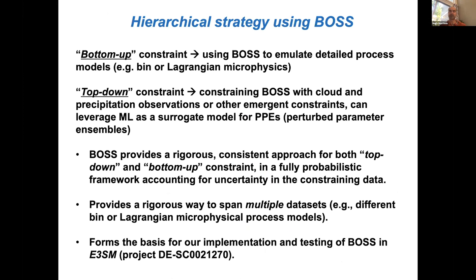Taking a step back, we can envision a more hierarchical strategy using BOSS — basically using it as a bottom-up constraint to emulate detailed process models or observations at the process level, or as a top-down constraint using cloud and precipitation observations or emergent constraints from satellite observations at the global level. Because of the cost of running full climate simulations globally, this can leverage machine learning as a surrogate model for perturbed parameter ensembles. There's work by Greg Elsesser, Marcus, and others applying that. BOSS provides a rigorous, consistent approach for both top-down and bottom-up constraints in a fully probabilistic framework accounting for uncertainty in the constraining observations, and also provides a way to span multiple data sets.